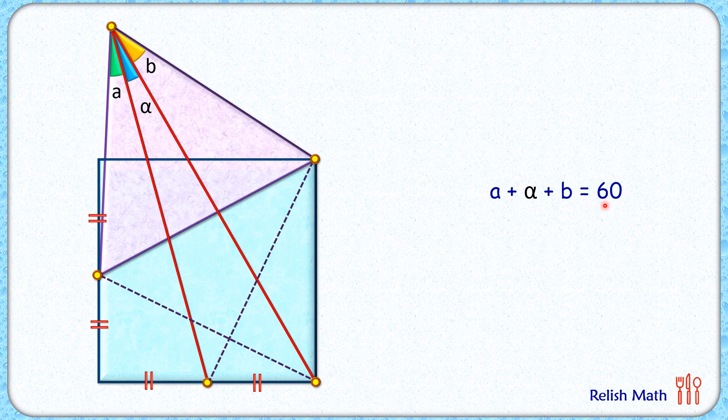Now we'll solve the question in two steps. In first step we'll prove that this yellow triangle is a right angle triangle, and then we'll find the value of a plus b and we'll put it in this equation to get value of alpha. So let's first prove that this triangle is a right angle triangle.